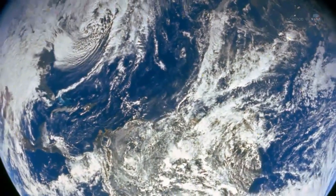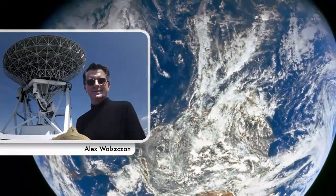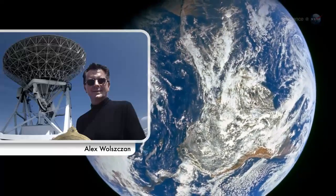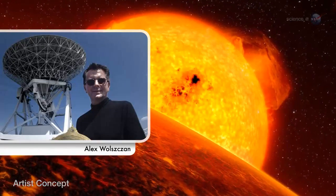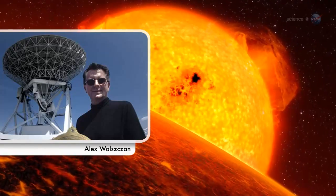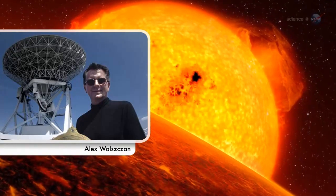Could the same thing happen to Earth? Yes indeed, says Alex Wolszczan, a member of the research team from Penn State University. A similar fate may await the inner planets in our solar system when the Sun becomes a red giant some 5 billion years from now.